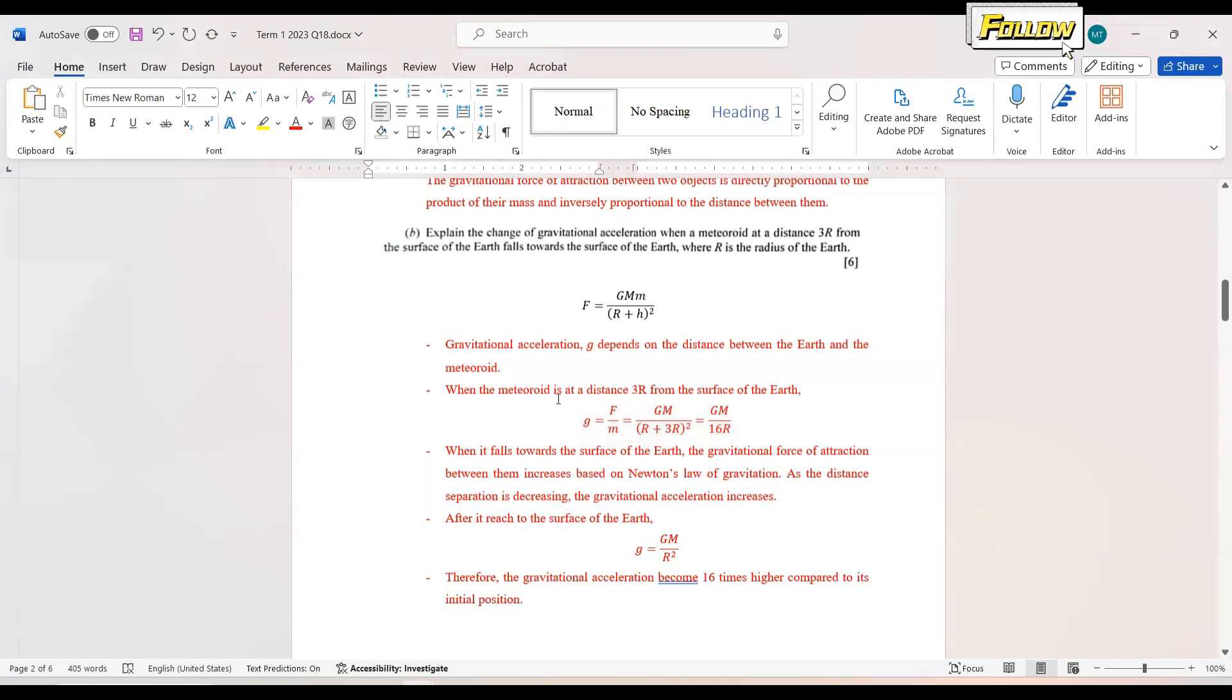When the meteorite is at the distance of 3R from the surface of the Earth, we could roughly calculate that g is GM over 16R squared. So when the meteorite falls toward the surface of the Earth, we could say that the gravitational force of attraction between them increases based on Newton's law of gravitation. Since the distance is decreasing, according to the formula that we have, the force is increasing, so the gravitational acceleration also increases.